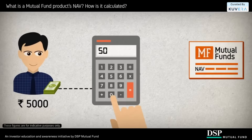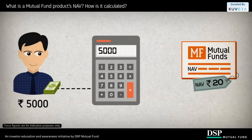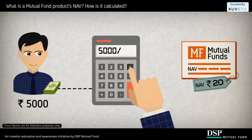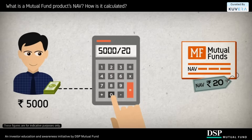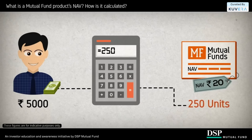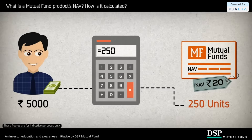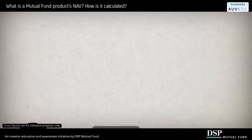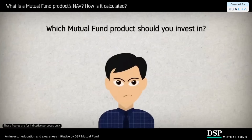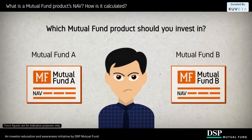So if you were looking to invest rupees 5,000 in a mutual fund product with an NAV of rupees 20, you will effectively end up buying 250 units of that product.